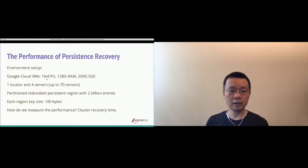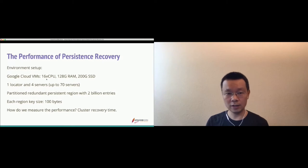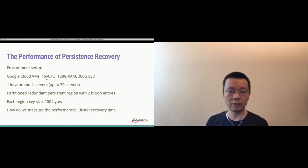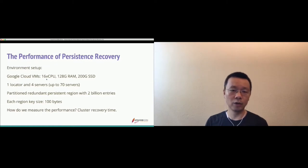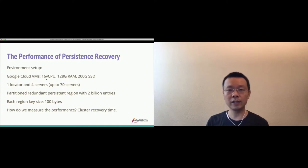For the data, we have partitioned redundant persistent regions with 2 billion entries. Each region key is 100 bytes in size. We kept the default values for other Geode configurations to fix some configurations and tune others. We measure performance using a simple metric: cluster recovery time — meaning the time the cluster takes to recover data from the hard drive until it's ready to serve client requests.